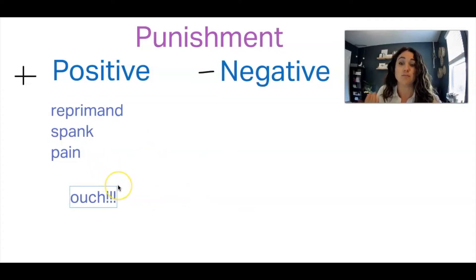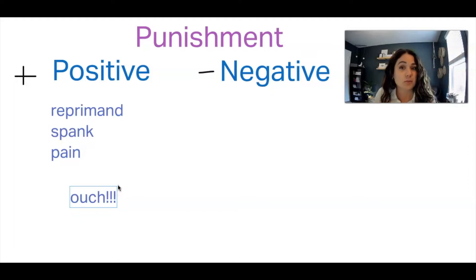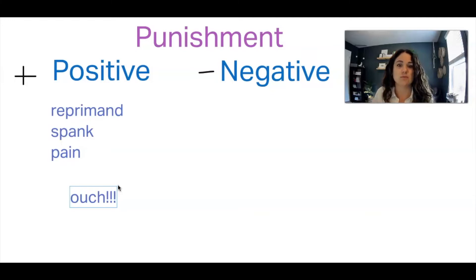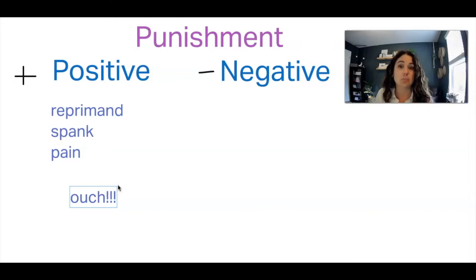Here we have some examples of positive punishment. It's often adding something we don't like, like a reprimand, a spank, or a painful stimulus. Now, reprimands are not always positive punishment — sometimes people think they're providing punishment by saying 'don't do that,' but then they get a giggle or more attention-seeking behavior. So we have to be mindful of what happens to the behavior later. These are not recommendations; we do not practice these things in ABA, and oftentimes we completely stray away from punishment unless it's for a safety reason. We have to be able to recognize when these are happening so we can jump in and recommend other things like reinforcement-based strategies.